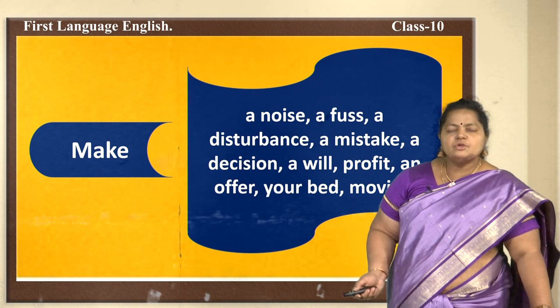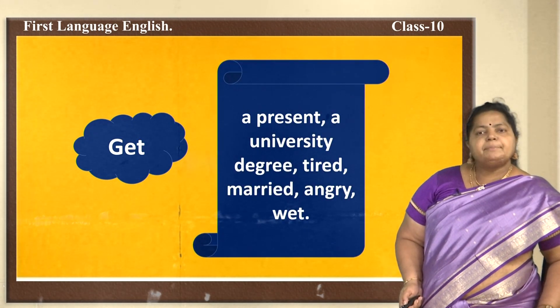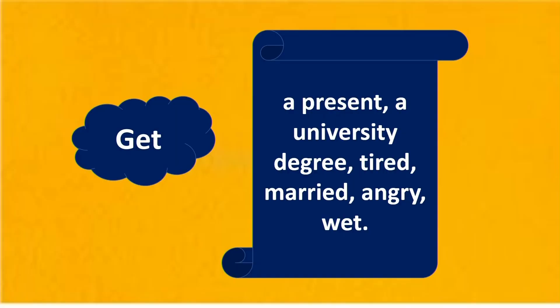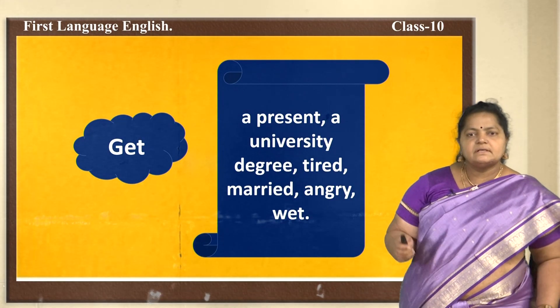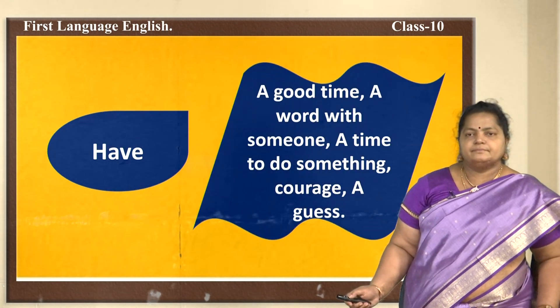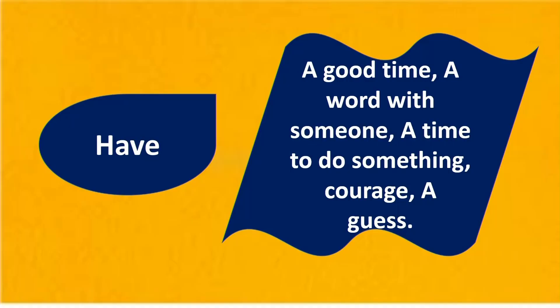Collocated words with 'get': get a present, get a university degree, get tired, get married, get angry, get wet. Collocated words with 'have': have a good time, have a word with someone, have time to do something, have courage, have a guess.